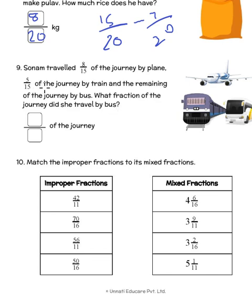So she has completed 13 by 15 of the entire journey of 15 by 15. So the remaining journey is 15 minus 13 is 2 by 15 of the journey is what she travels by bus. Now let us look at the next one.